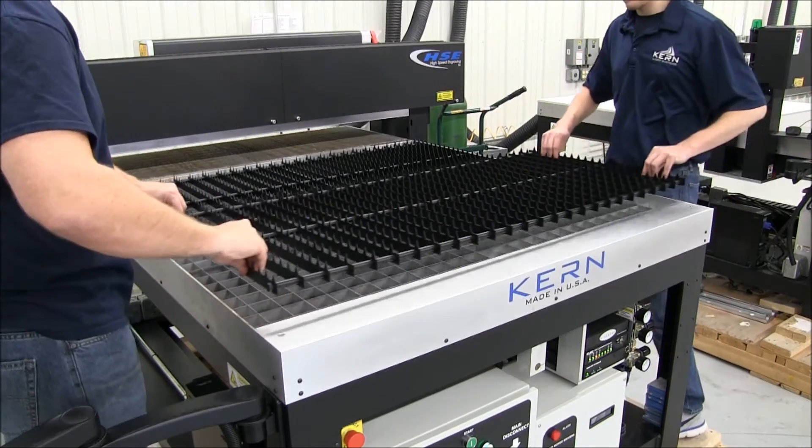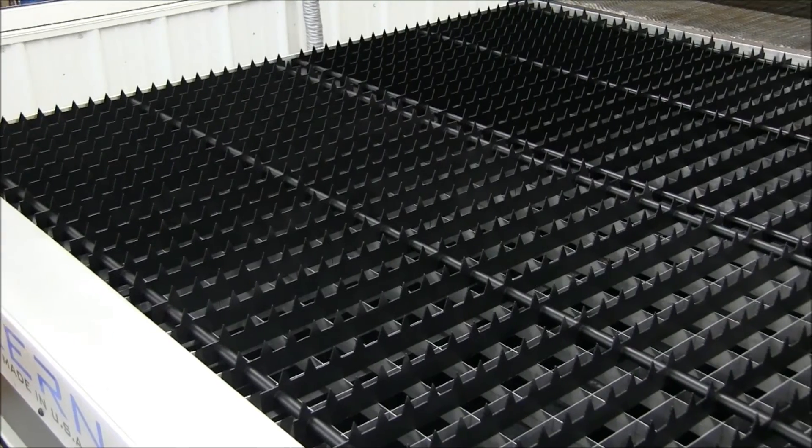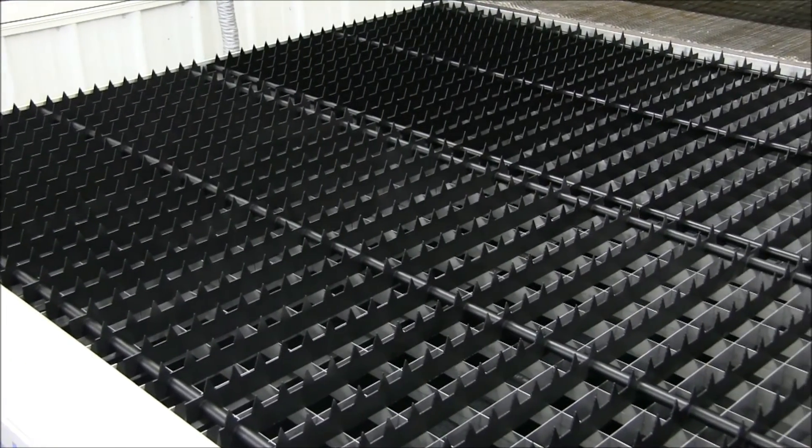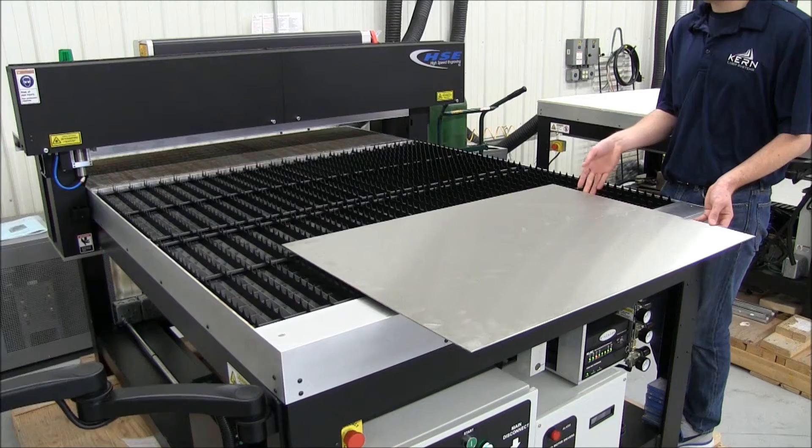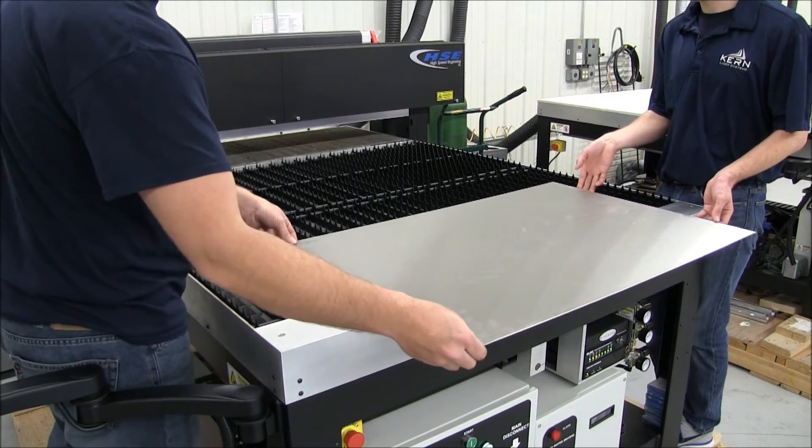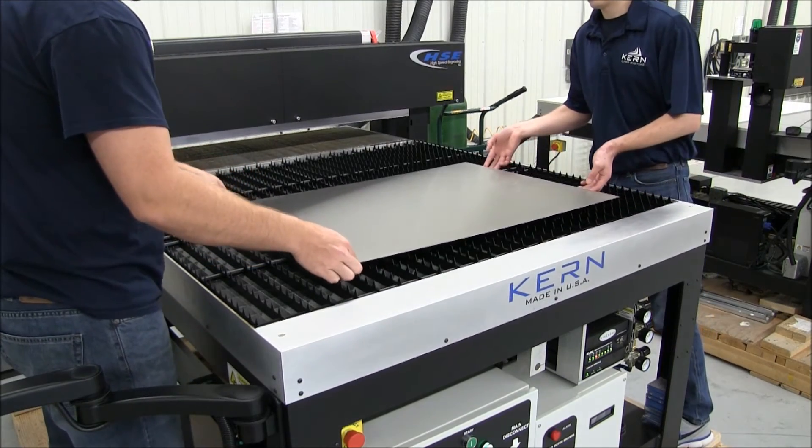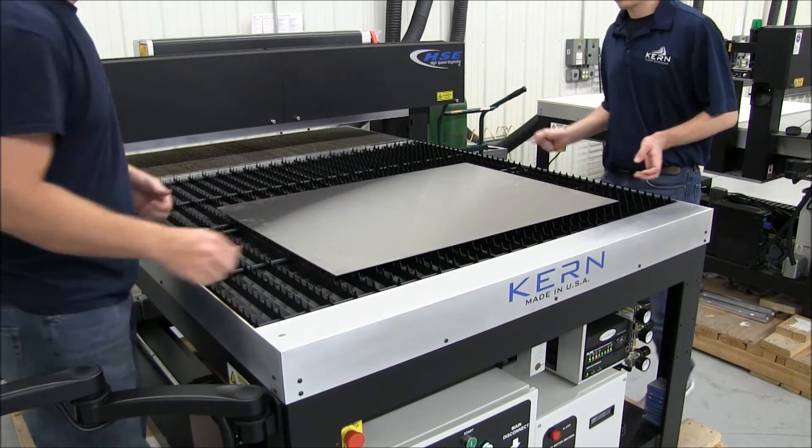The metal cutting table is constructed of a durable steel gridwork, which minimizes the surface contact with the bottom side of the metal being cut. A 4x8 or 5x10 sheet of metal will fit comfortably onto Kearn's largest cutting table.